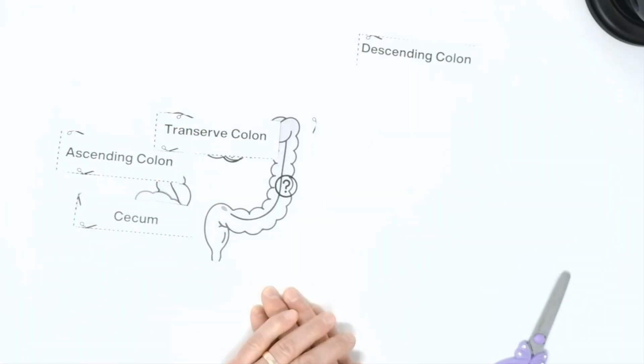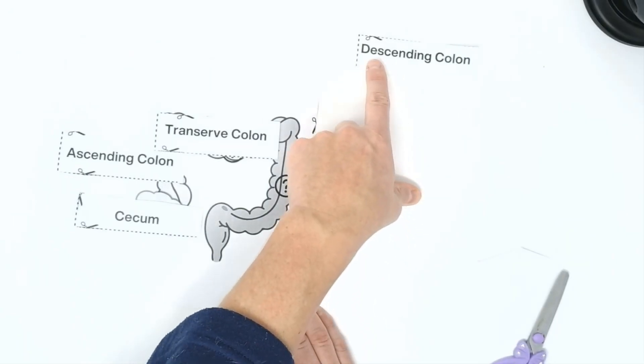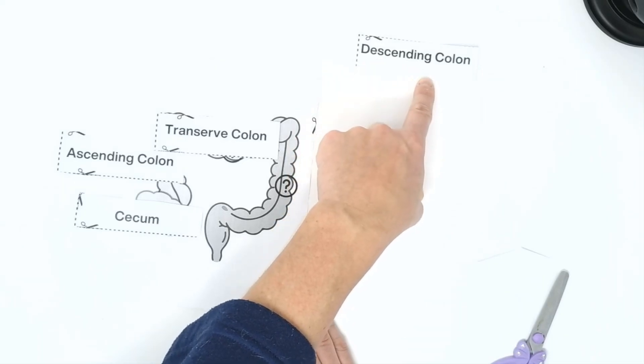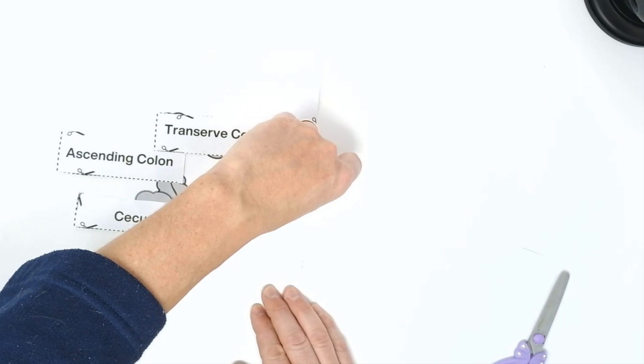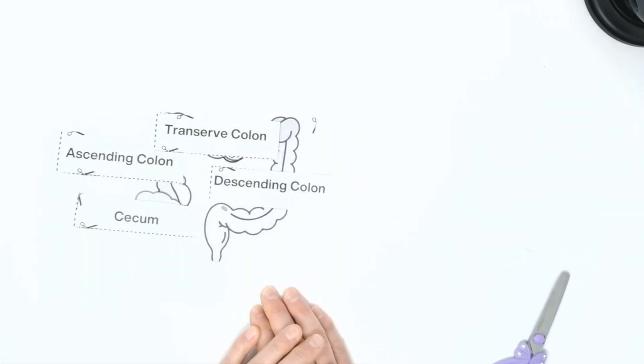And our last portion is going down. Before it's pooped out, it's going down this portion of the large intestine. Our only option left is the descending colon. The descending colon is going down. And there we go.